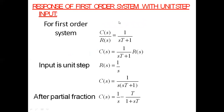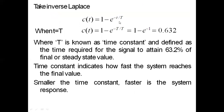The response of a first order system with unit step input. A first order system can be represented as C(s)/R(s) equal to 1/(τs + 1). So the output C(s) equals 1/(τs + 1) times R(s). The Laplace transformation of the unit step input is 1/s, so C(s) becomes 1/(s(τs + 1)). After partial fraction decomposition, C(s) equals 1/s minus τ/(1 + τs). Taking the inverse Laplace, c(t) equals 1 minus e^(−t/τ).